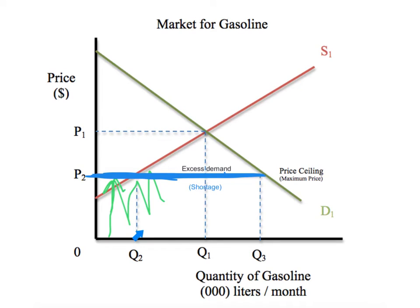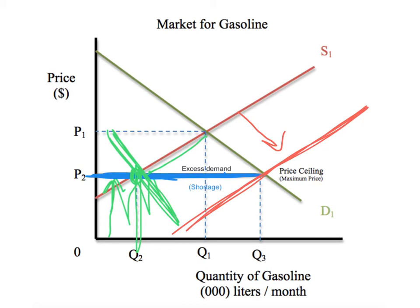The government has a number of things it can do to try to eliminate the shortage — essentially two options. First, it could attempt to shift the demand curve inward to reduce demand, reaching a new equilibrium of P2, Q2. But if they did that, this would limit consumption of the product, which goes against the whole point of the price ceiling.